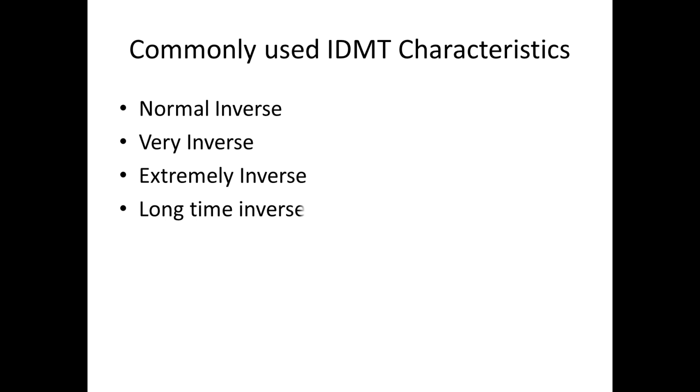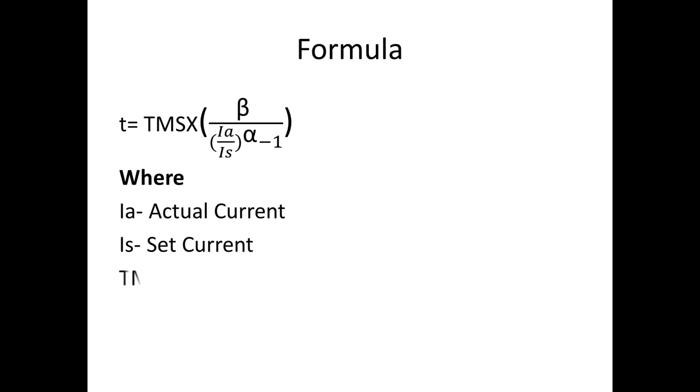For all these curves generally we have one formula. T is equal to TMS times beta divided by (Ia/Is) to the power alpha minus 1. Where Ia is actual current, Is is set current, TMS is time multiplier setting.